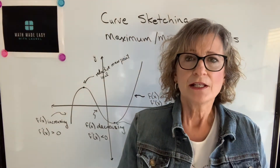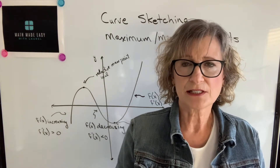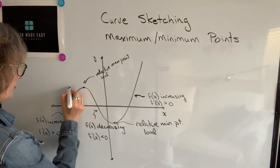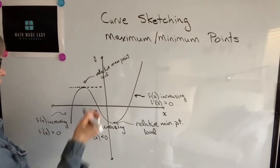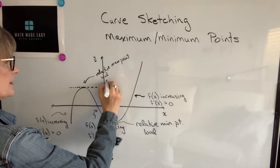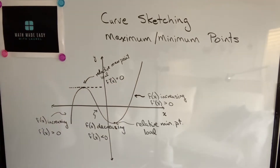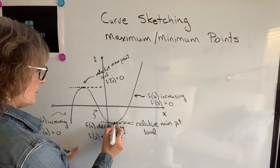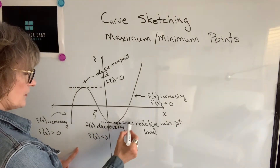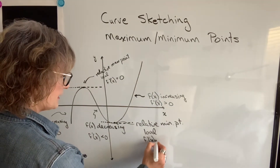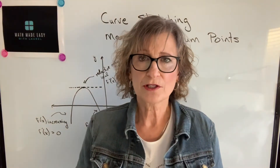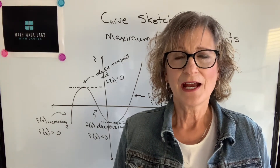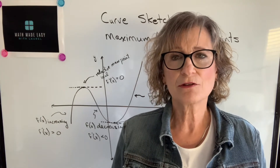If you can find those extreme points, then you know that's where the function changes from increasing to decreasing, or decreasing to increasing. Those points have a special characteristic: if we were to take a tangent line at that point, it would actually be horizontal, which means that the slope is zero, which means that the derivative is zero at that point. The same thing for the relative minimum point — it has a horizontal tangent line as well, so the derivative at that point is zero. That's going to be true for all extreme points, whether they're relative or global — they will all have a horizontal tangent line.